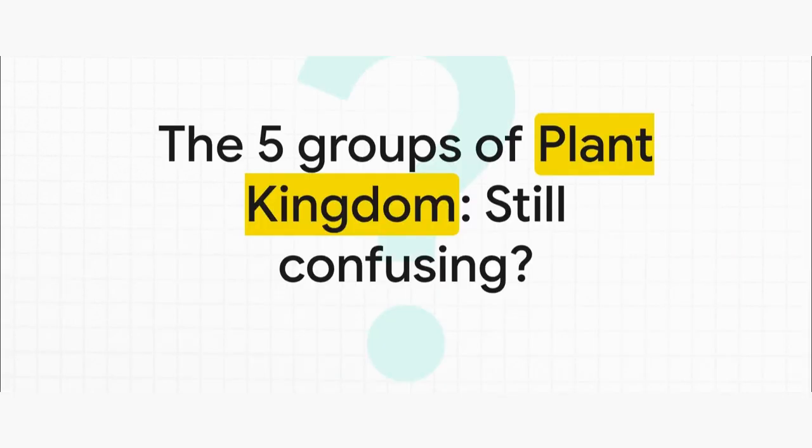Let's be honest. The five groups of the plant kingdom — algae, bryophytes, pteridophytes, gymnosperms, angiosperms — it's so easy to mix up their features. I know it happens all the time. But don't you worry. In just the next few minutes, we're going to clear up all that confusion, like for good. Let's dive right in.